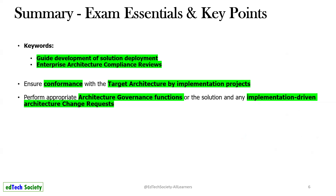The main keywords to remember for the exam are: guide the development of solution deployment, enterprise architecture compliance reviews — these two are the main things for Phase G. Also: ensure conformance with the target architecture by implementation projects, and perform appropriate architecture governance functions for the solution and any implementation-driven architecture change requests.